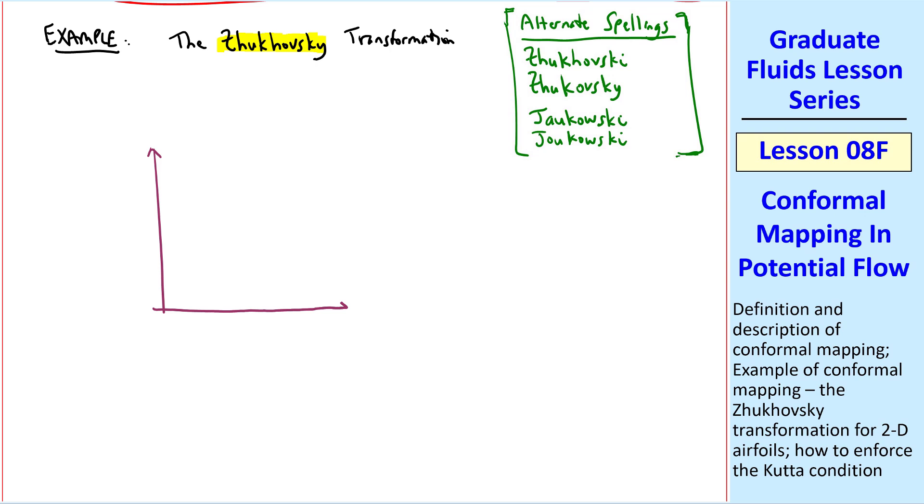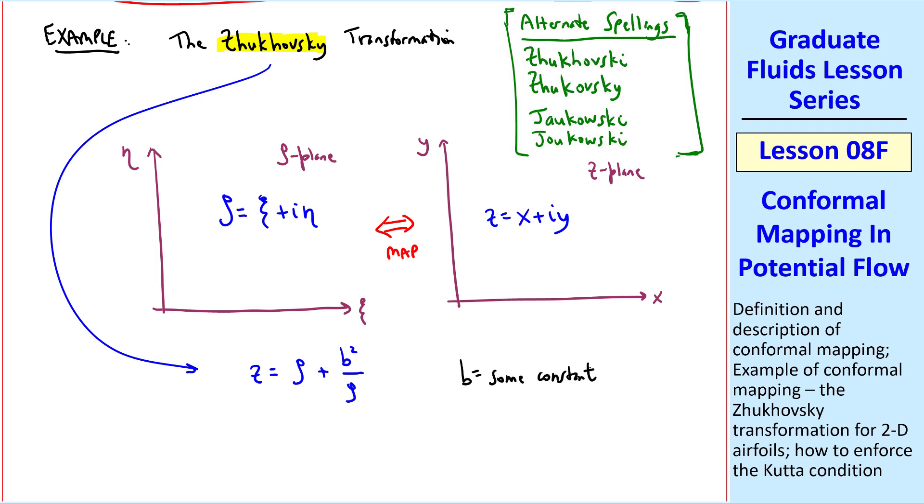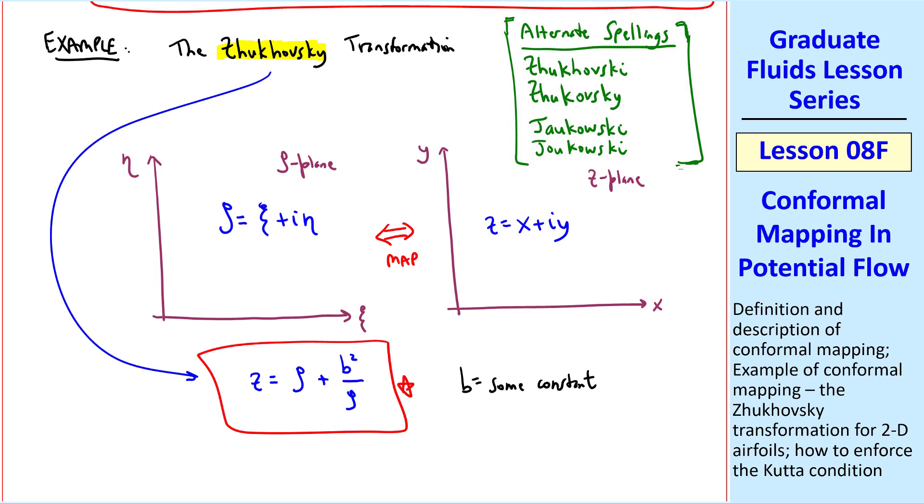Conformal mapping involves two complex planes, the zeta plane with coordinates psi and eta, and the z plane with coordinates x y. In both cases, the horizontal axis is real, and the vertical axis represents the imaginary component of zeta or z. I'll use this double arrow to indicate that we're transforming from one of these planes to the other, and you could go either way. We call this mapping or conformal mapping. Zeta is psi plus i eta, just as z is x plus i y. The Joukowsky transformation uses the transformation function, z equals zeta plus b squared over zeta, where b is some constant, which we'll typically set to one. This is the Joukowsky transformation.